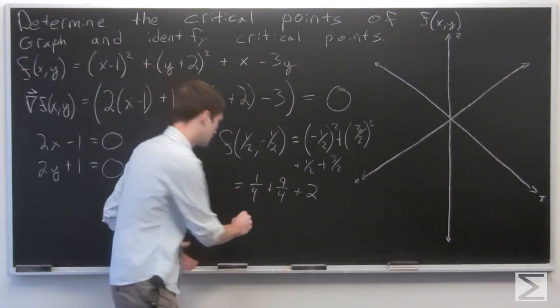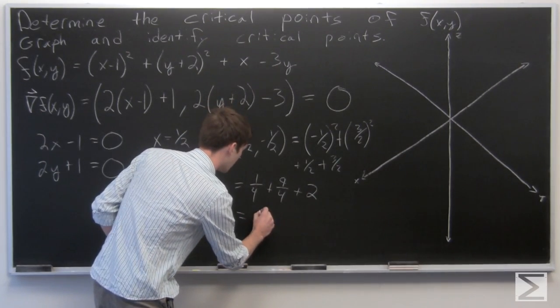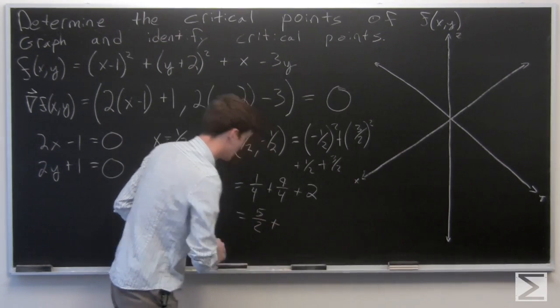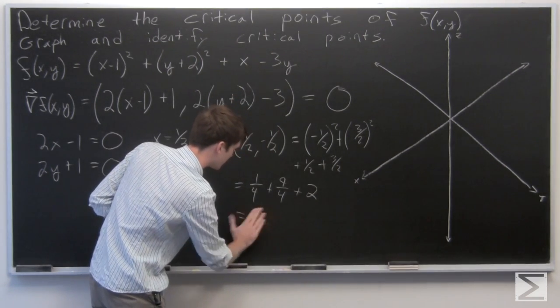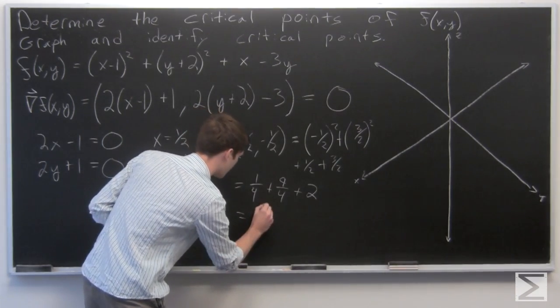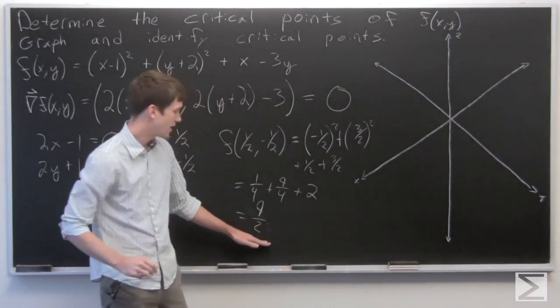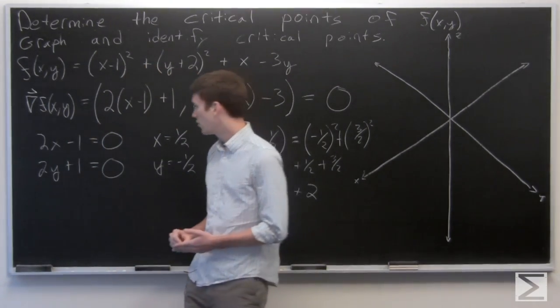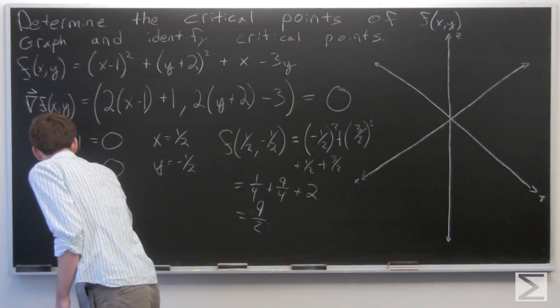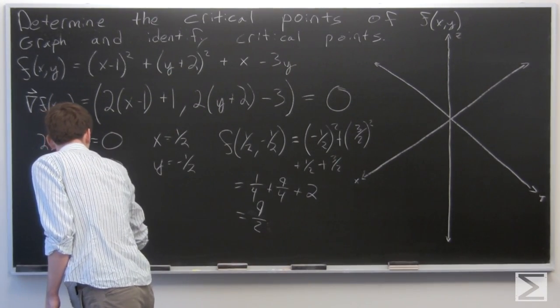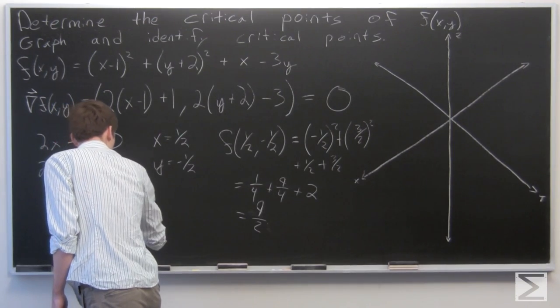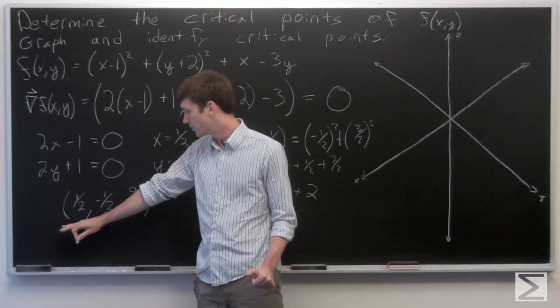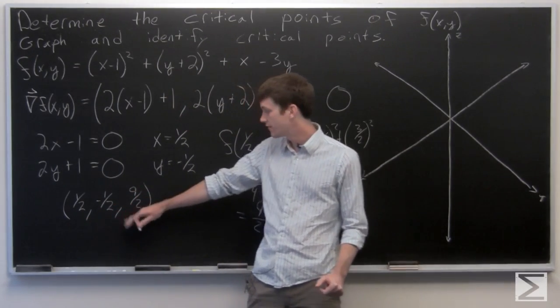And so we can simplify this a little bit, we get 9/2 is our z component. So our critical point lies at, on our graph it's going to be (1/2, -1/2, 9/2).